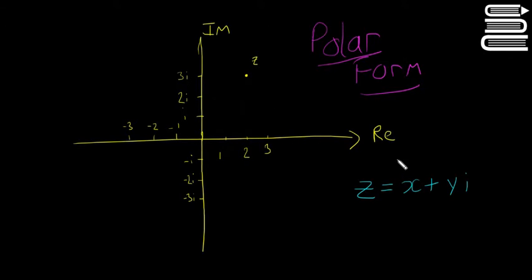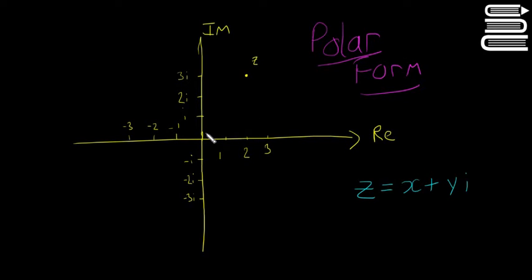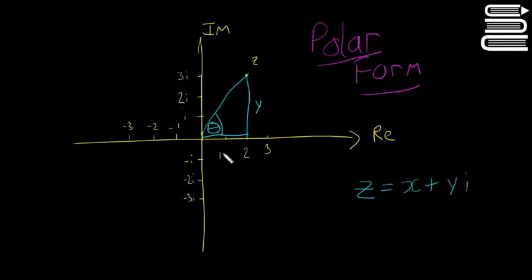Now we're going to look at polar coordinates, which are a little bit different. For example, consider the point 2 + 3i. I'm going to draw a straight line down and then a straight line across to form a right-angle triangle. I'm going to call this angle theta, label this side y, this side x, and the hypotenuse r.